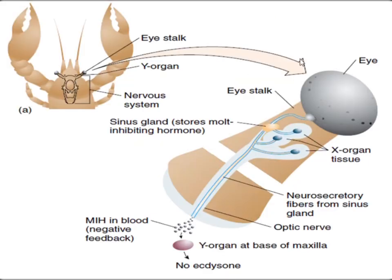Looking at the diagram, here is the eye stalk — zoomed in you can see the X organ tissues and the sinus gland associated with the X organ, which stores the molt-inhibiting hormone (MIH). Here is the Y organ, which is present at the base of the maxilla.